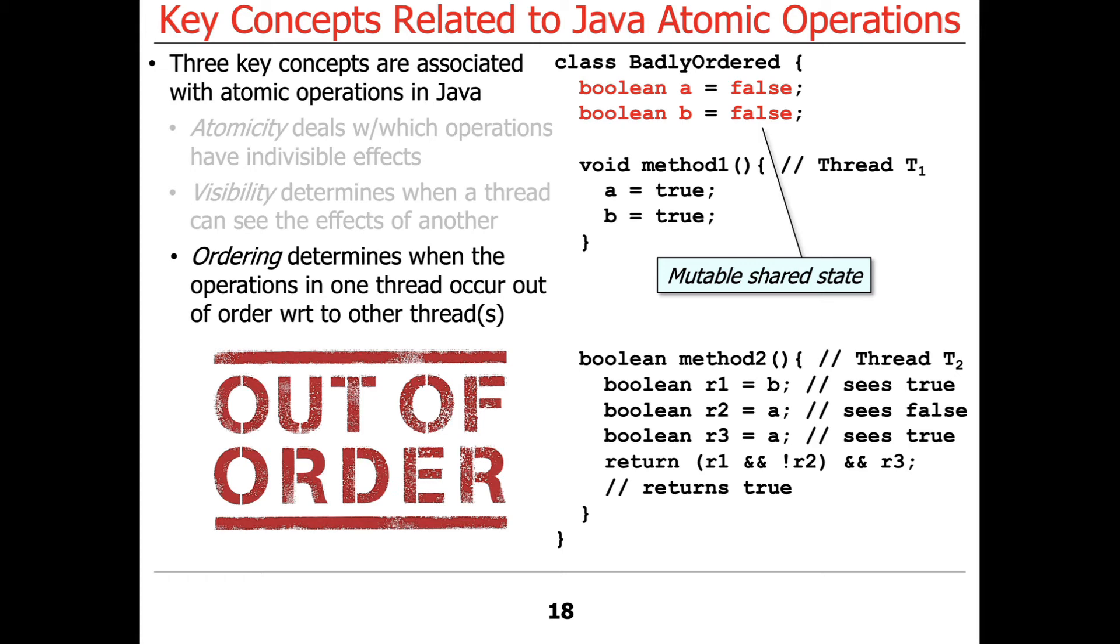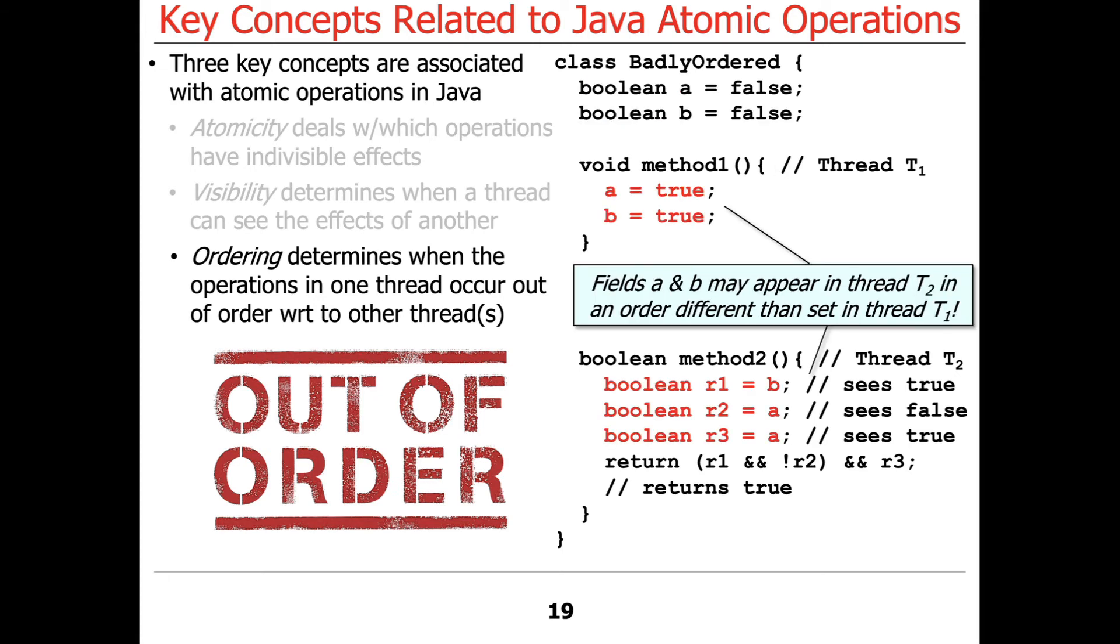And now we've got ourselves two methods, m1 and m2. Method m1, let's assume it runs in thread T1. It sets A and B to true. And you would think once that happens, then A and B would be set to true for the thread that's going to be reading them. Well, as it turns out,